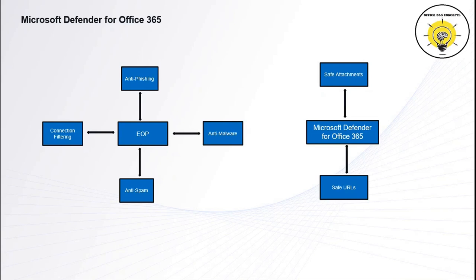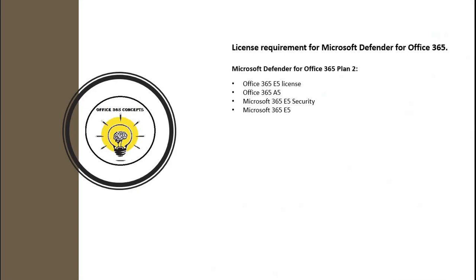Exchange Online Protection includes multiple filtering servers, such as connection filtering, anti-spam policies, and anti-malware policies. Microsoft Defender for Office 365 provides an extra layer of security by scanning the URLs and attachments within the emails. Now let's understand what sort of licenses are required to manage these filter policies.